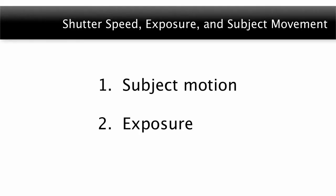The shutter in your camera affects two things: subject motion and exposure. The shutter is a tool to control the amount of subject motion. By choosing the correct shutter speed, the photographer has the choice of showing motion or stopping motion within the image. This is one of the decisions to be made when setting up your shot.